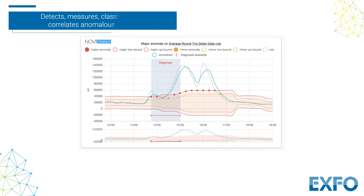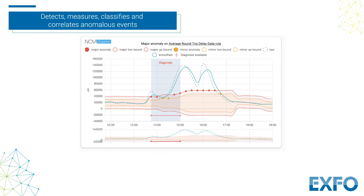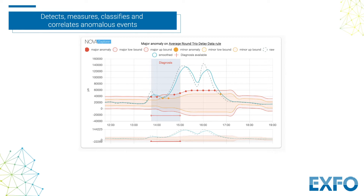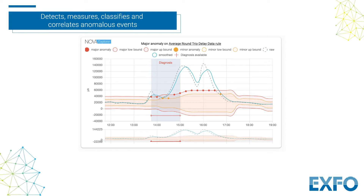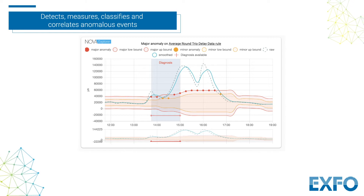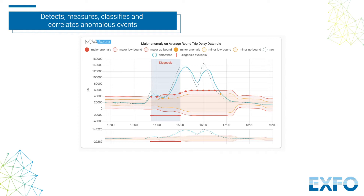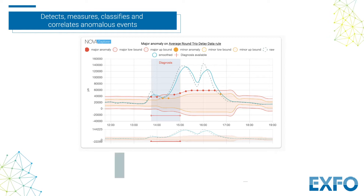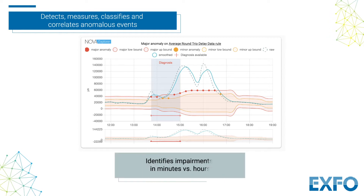NovaSense AI looks through thousands or even millions of data points in real time across different domains, different systems, and different dimensions, and automatically correlates self-learned anomalies into related case groups with root cause diagnosis based on the similarity of their patterns and the time of their occurrence — all in minutes versus hours.